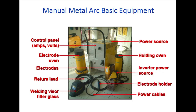The basic equipment for manual metal arc welding includes: a control panel, electrode oven (required as per manufacturer recommendation for continuous electrode conditioning), internal lead, electrode holder, filter glass, power source - inverter power source, and power cable. These are all the equipment requirements for MMA welding.